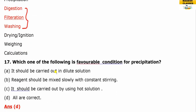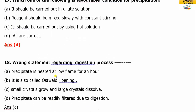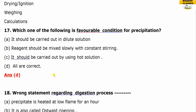Which of the following is a favorable condition for precipitation? The favorable conditions are: dilute solution, constant stirring, and carrying out precipitation using hot solution. All of these are correct. These are knowledge-based questions.